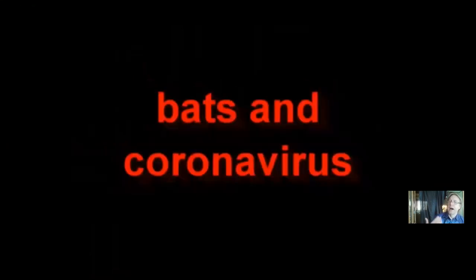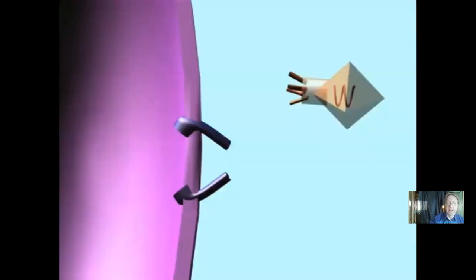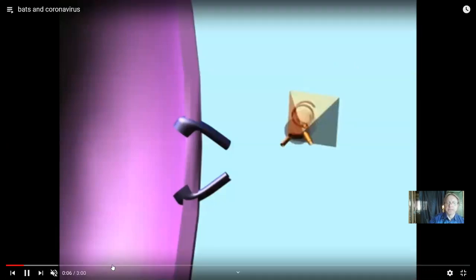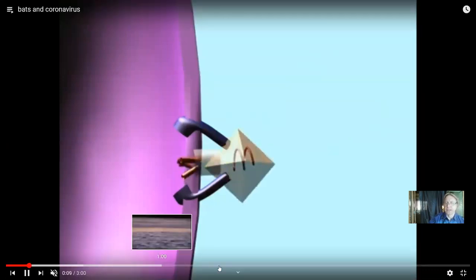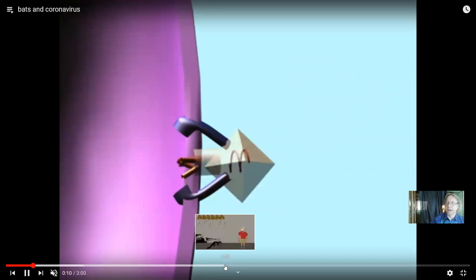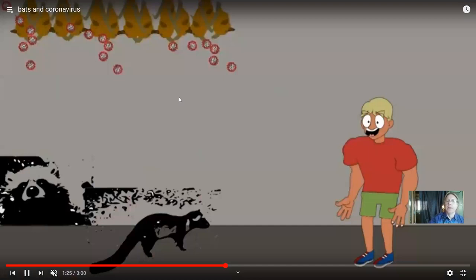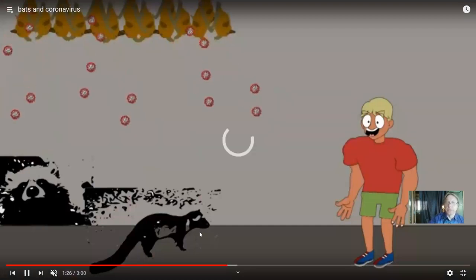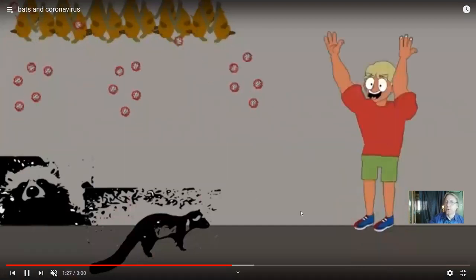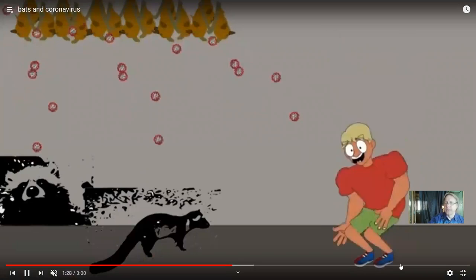And then in late 2019, apparently a new strain then jumped species going from bats, which is once again where most coronaviruses occur more than in any other group. And then maybe to another organism, but then ultimately then infected humans.